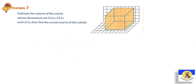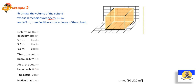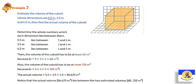Estimate the volume of the cuboid whose dimensions are 5.5 m, 3.5 m, and 4.5 m. Then find the actual volume. Estimate means we approximate the numbers. So 5.5 is between 5 and 6, 3.5 is between 3 and 4, and 4.5 is between 4 and 5. If we take the smallest: 5 times 3 times 4 = 60. So the volume is at least 60.